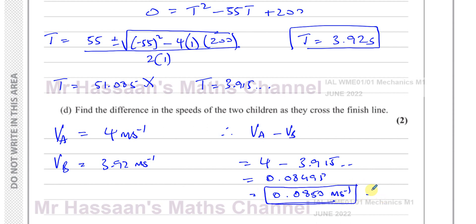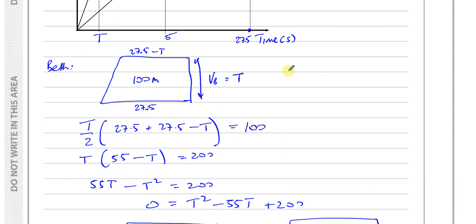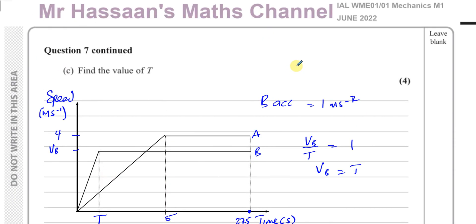That's the answer to Part D, which concludes this question from the June 2022 M1 exam. Other questions from this paper and from the topic of speed-time graphs can be found in the playlists. You can subscribe to the channel by clicking the link. Thank you for watching and see you soon.